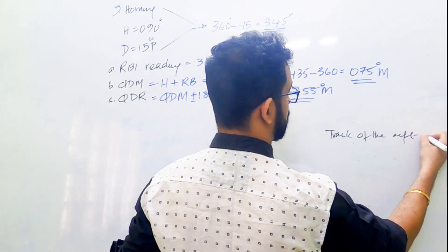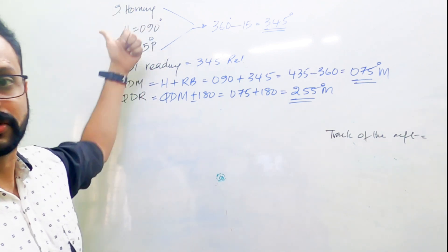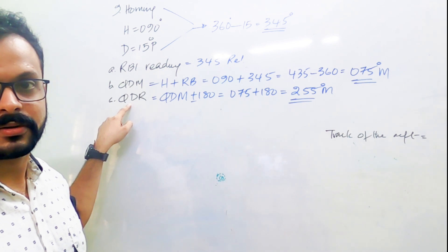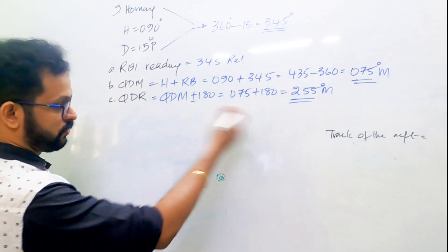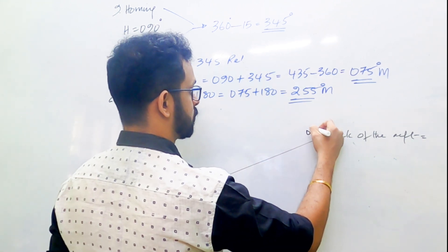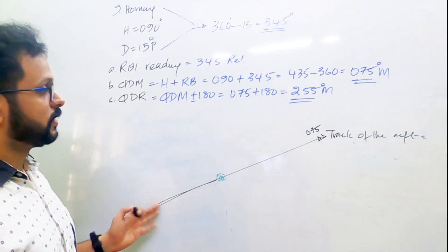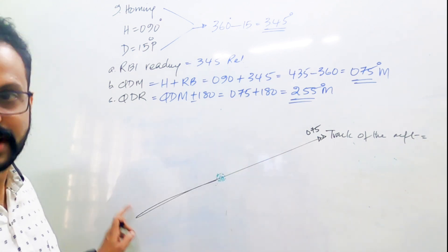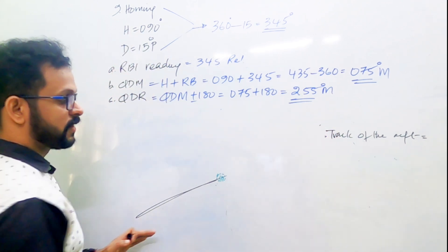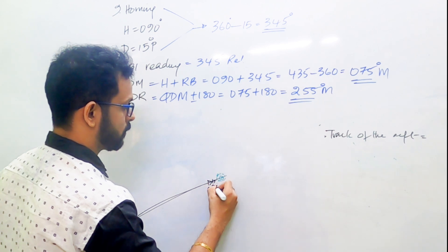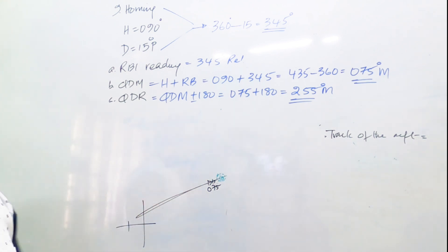The track is 075 degrees. Since the aircraft is homing towards the station, the QDM itself is the track of the aircraft. If moving away, the track would be the QDR. So QDM is 075 — let me draw a general track of 075. The aircraft should be placed to the left of the NDB on that track. The track is 075 and the heading is 090, with the aircraft moving towards the station.